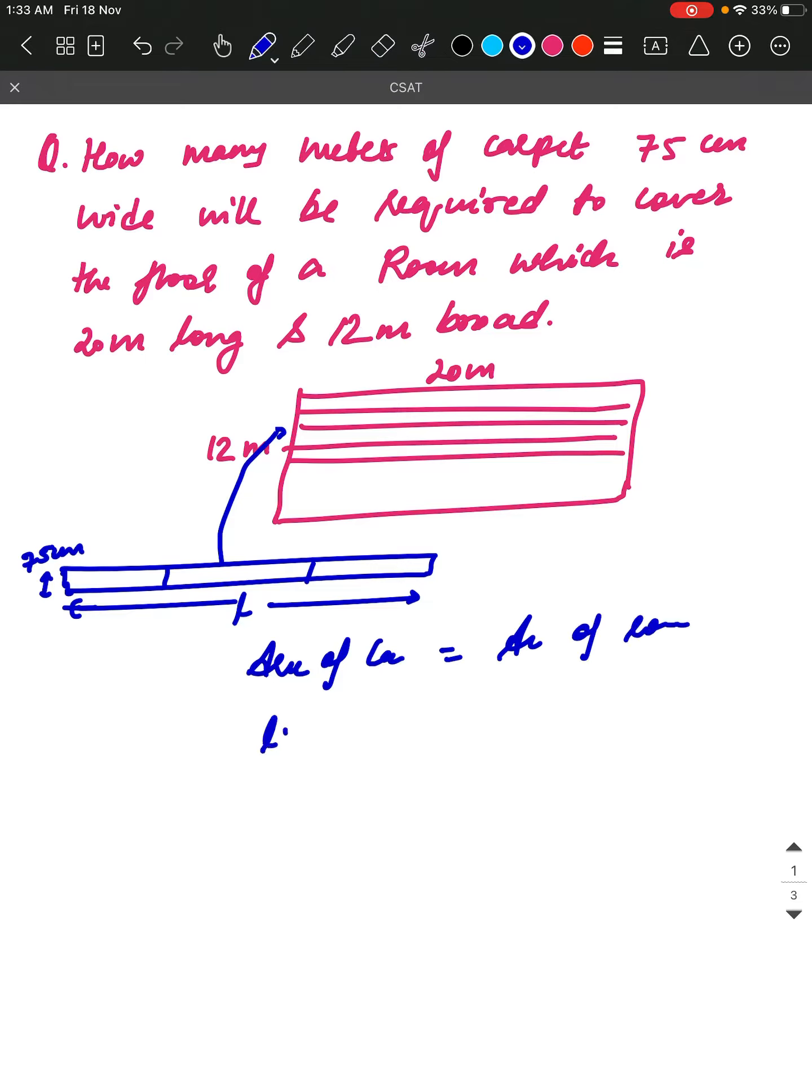Area of carpet will be equal to L times 75 cm (in meters, divided by 100), and area of room is 20 meters times 12 meters. Now we will solve it.